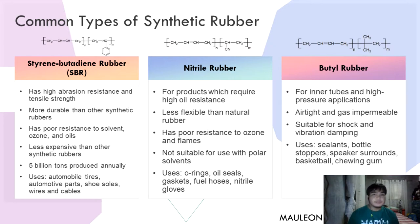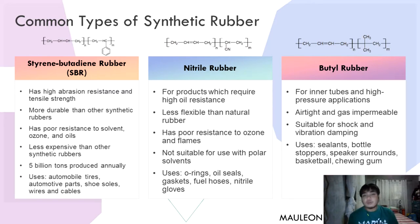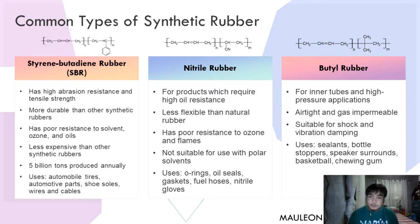Nitrile rubber is used for products which require high oil resistance. It is less flexible than natural rubber, has poor resistance to ozone and flames, and is not suitable for use with polar solvents. It is commonly used in O-rings, oil seals, gaskets, fuel hoses, and especially nitrile gloves.